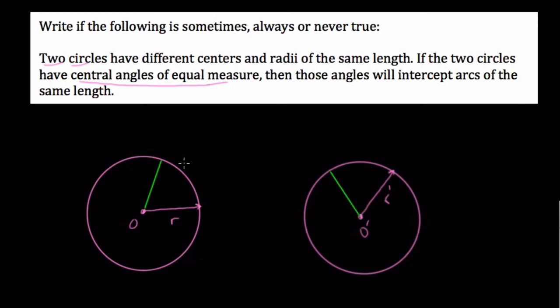Because these circles are exactly the same size, this angle, whatever it is, theta, and this one, those are equal angles, they'll intercept equal portions of the circle.